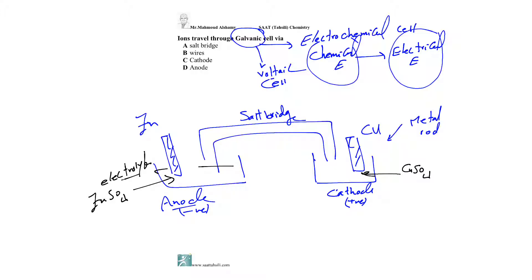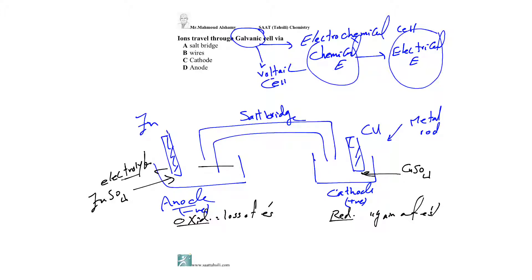What actually happens at the cathode is a reduction process. Reduction means the gain of electrons. What actually happens at the anode is the opposite — an oxidation process, which means the loss of electrons. The two electrodes are connected with a wire and a bulb.